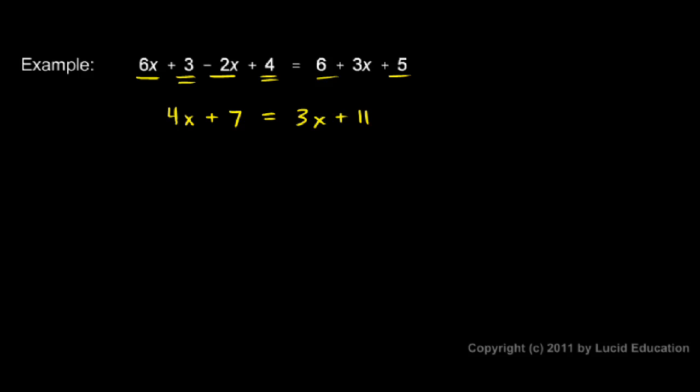Now I'll subtract 3x from each side. That will get rid of the 3x on the right, making me have all the x's on the left. That's what I want - all the x's on one side.